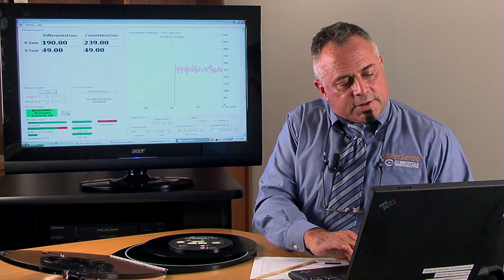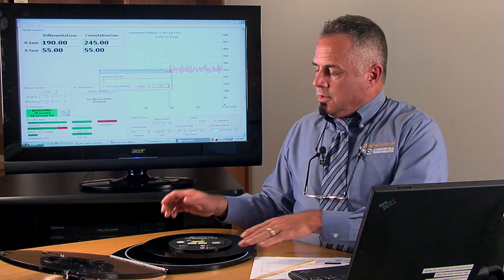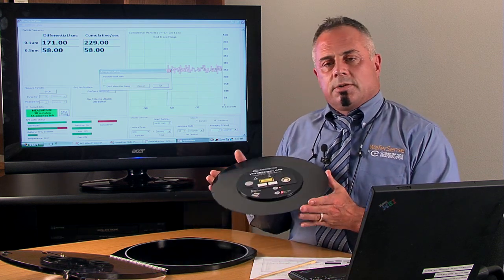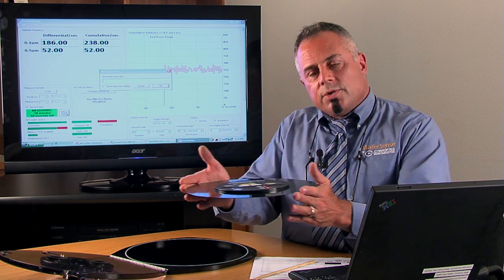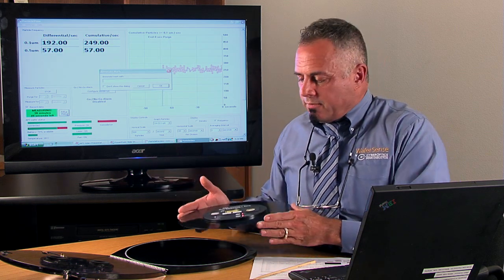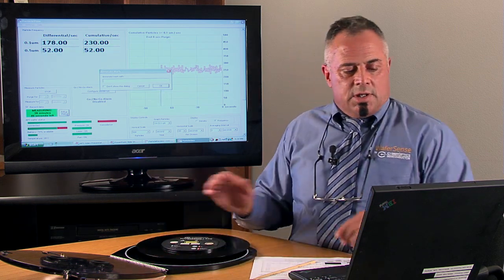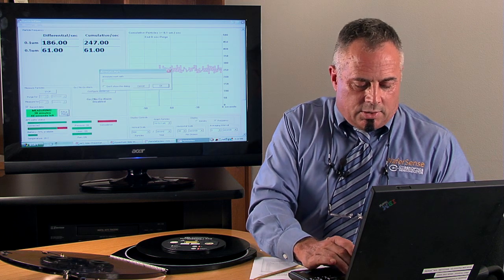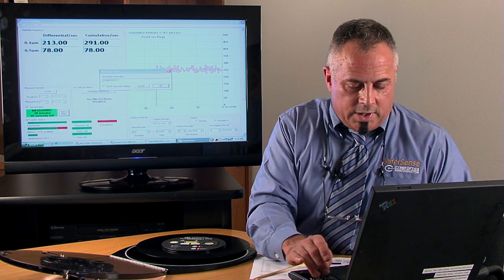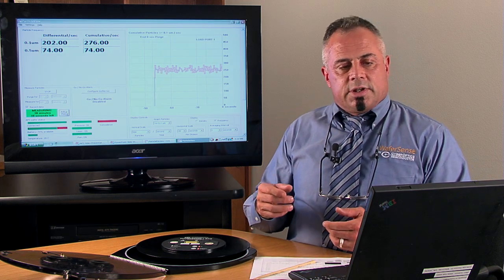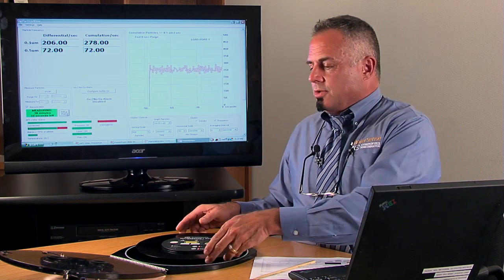One of the more important features of the particle view software is annotating in real time. So a typical usage of APS is to put it in your FOOP, run it through the tool to pre-qualify it. Check for particles. As it goes to each station, you can annotate in real time. In this case, load port 1, load port 2, etc. You see the annotation goes straight into the log file. So you know when and where the particles occurred.